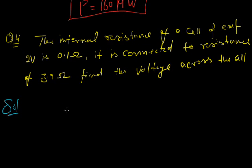Solution. We know that according to Ohm's law, V is equal to IR. Here I is total EMF upon total resistance, R plus small r.